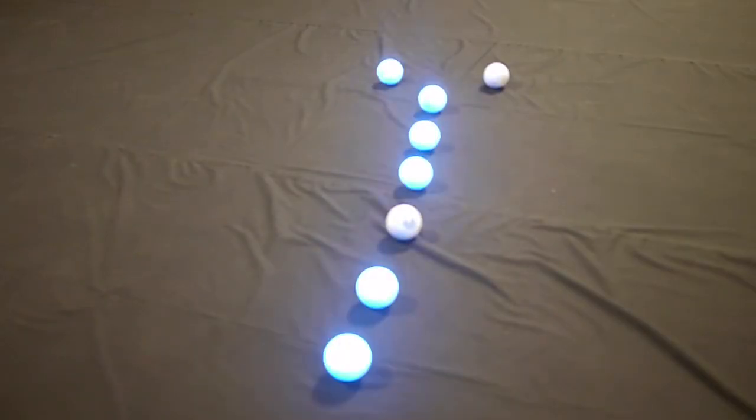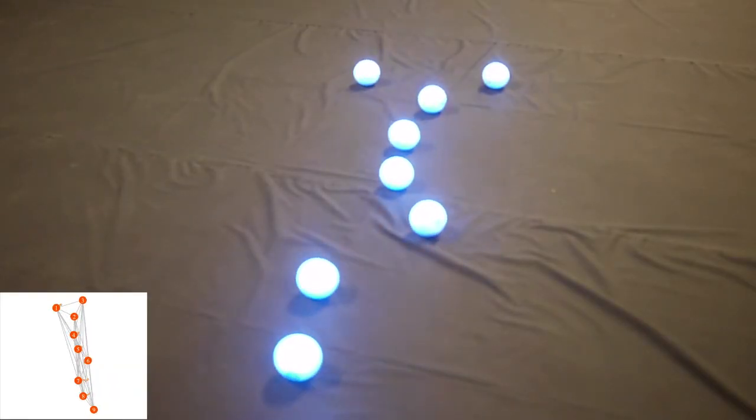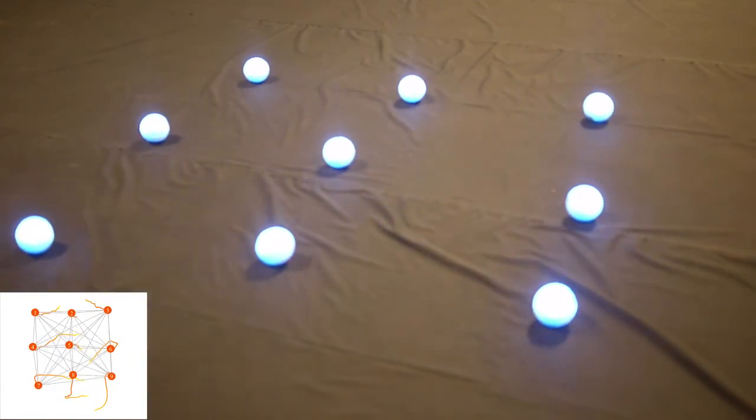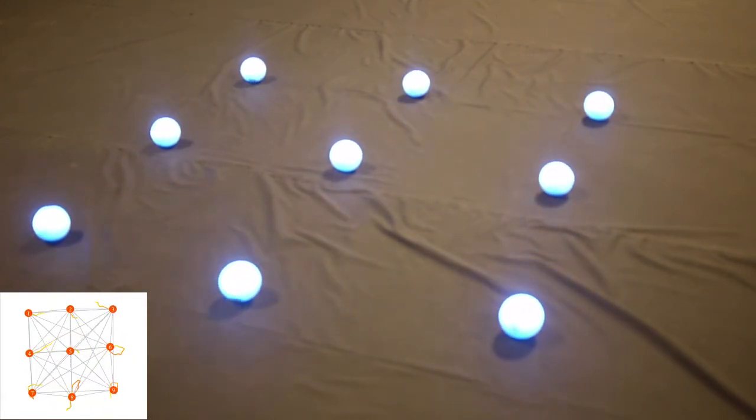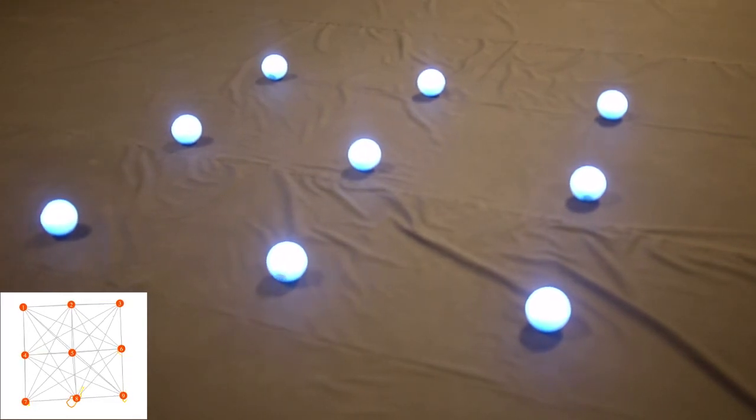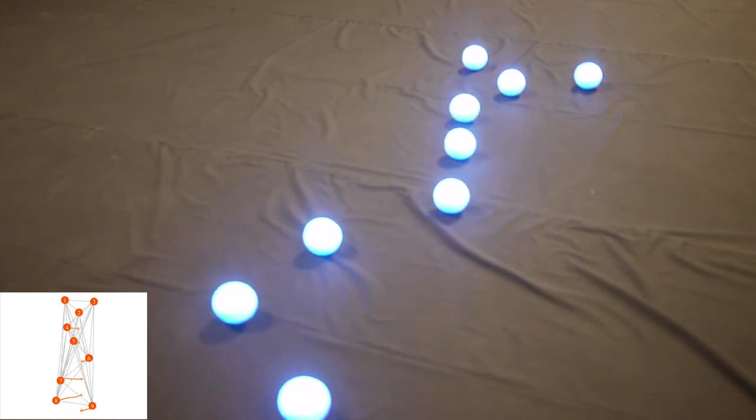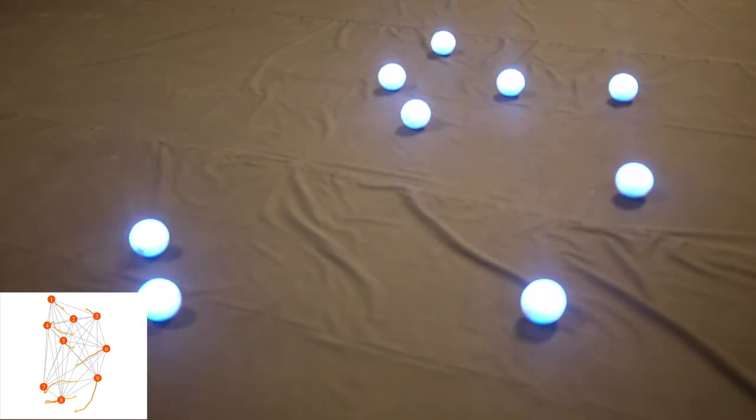In our last set of experiments, we consider a square grid desired formation of nine robots. Here, three computers are used where each computer controls three robots. The robots achieve the desired formation under the single integrator control, and they achieve the desired formation under the unicycle control without collision.